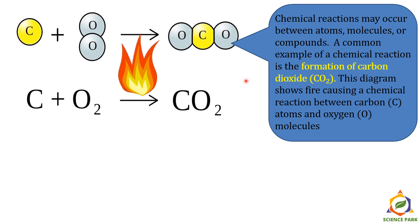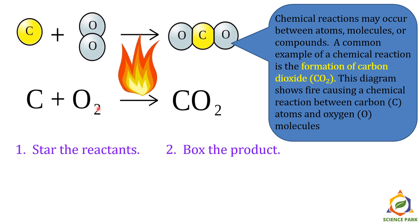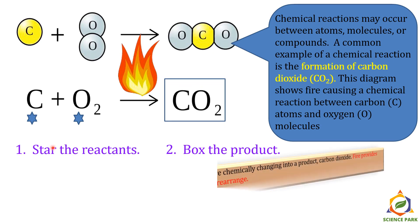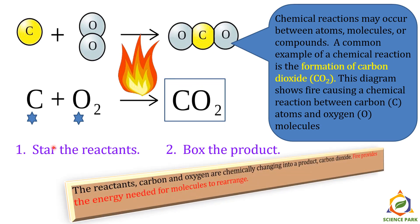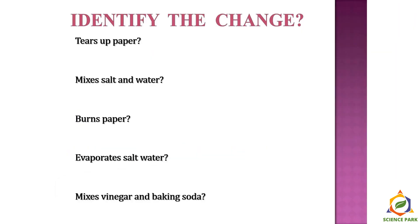This diagram shows fire causing a chemical reaction between carbon and oxygen molecules. In this reaction, you have to star the reactants and box the product. Pause the video here, write down this reaction in your notebook, star the reactants, and put a box around the product. Resume the video and check your answers. The reactants are carbon and oxygen; they are chemically changing into the product, carbon dioxide. Fire provides the necessary energy needed for the molecules to rearrange.